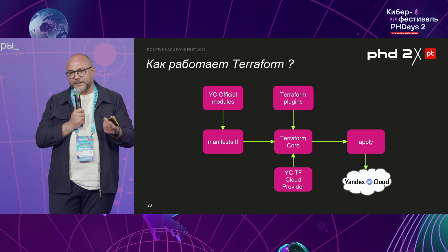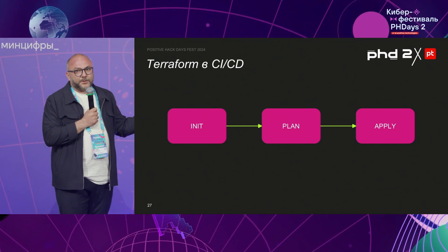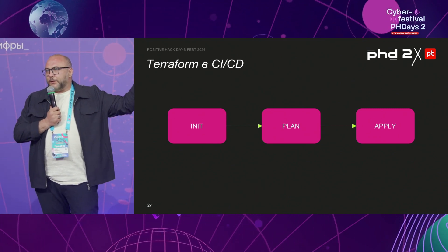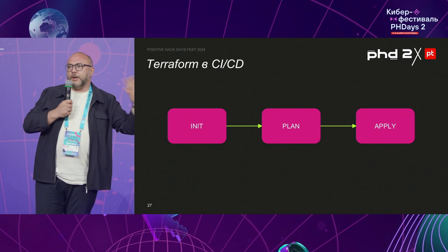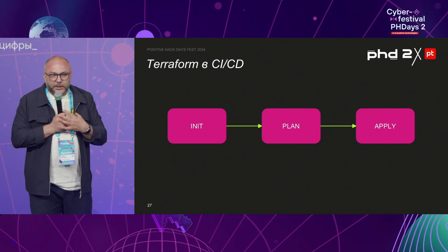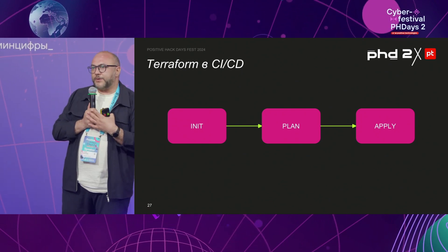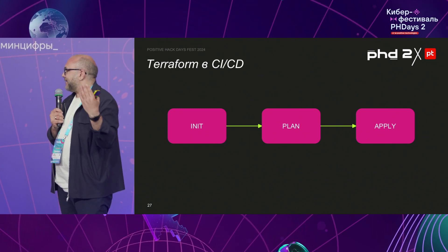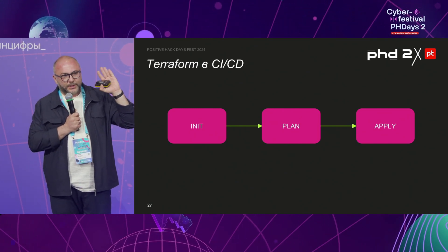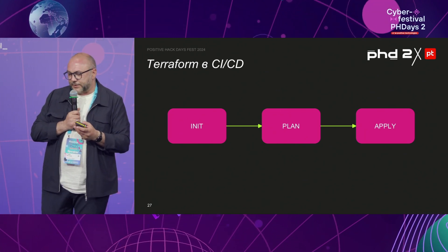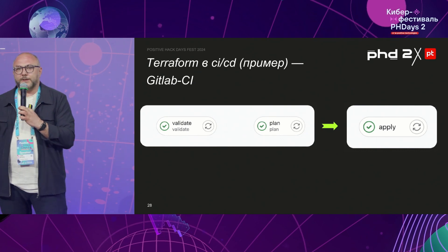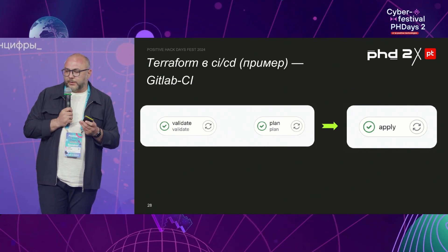Now let's get back to the development. What's the pipeline? How does it look? We're still working with Terraform. At the initiation stage, we write our manifests and get the plugins and other modules connected — all the things we require to come up with our infrastructure. Then there comes the planning stage, at which we validate and test. And the last stage is apply — where we deploy what we created. For instance, you use GitLab, and with GitLab you get your CI/CD like this.